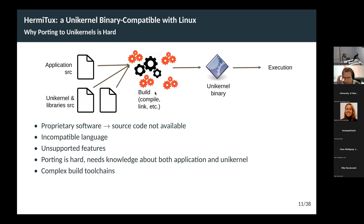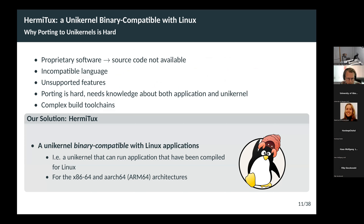Our solution to this problem is a unikernel that requires absolutely zero effort from the application programmer to run their application as a unikernel — a unikernel that is binary compatible with Linux applications. Binary compatible means it can take an application compiled for Linux and run it as a unikernel without recompiling, without requiring access to the source code — just take the binary and execute. Originally developed for X86-64 and later ported to ARM64.